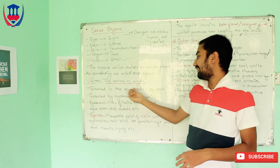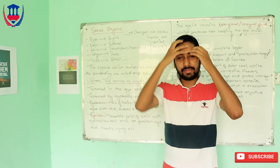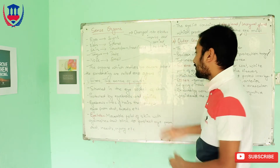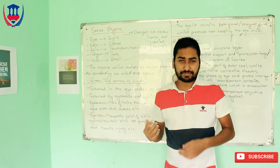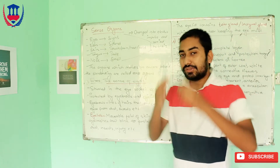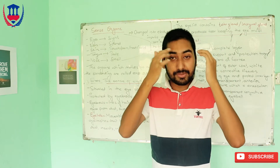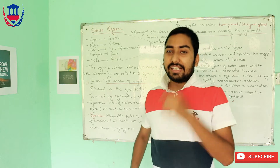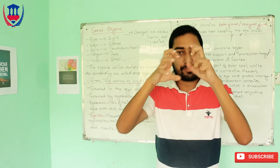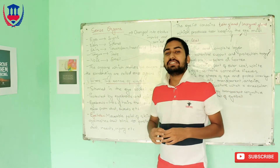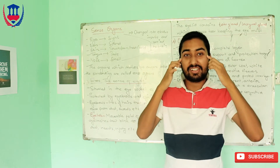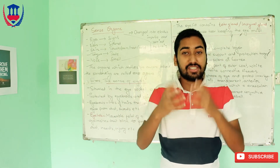First, the eye is situated in the eye socket of the skull. The skull protects the brain. The eye is protected by eyebrows and eyelids. The eyebrows trap dust and particles so they cannot enter the eye.